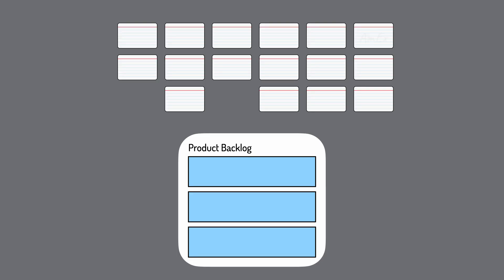A story map shows a sequence of steps users perform and alternative ways users can perform each step. Cards on a story map can become product backlog items in three different ways.